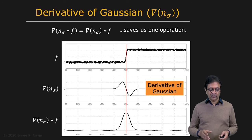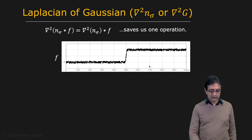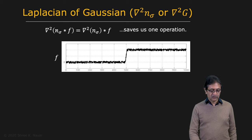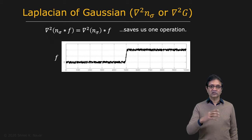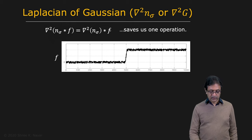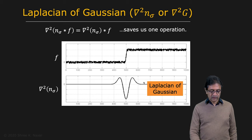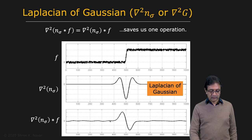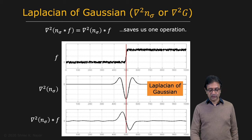You can do the same thing with the Laplacian operator. Instead of smoothing the image and then applying the Laplacian, you can apply the Laplacian directly to the Gaussian to get what's called the Laplacian of Gaussian (LoG) operator, and simply apply that single operator to the image. When you apply the LoG to the signal, as expected, you get a strong zero crossing at the location of the edge.